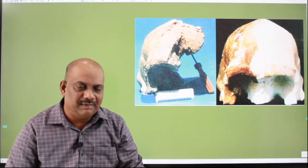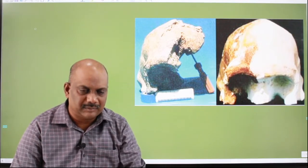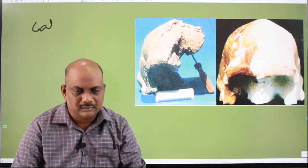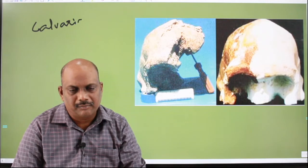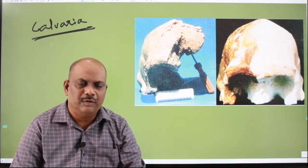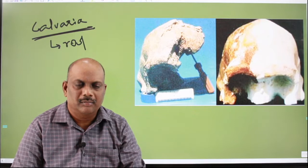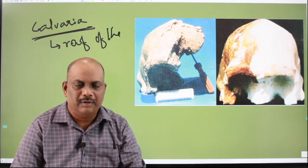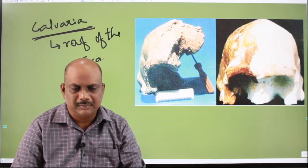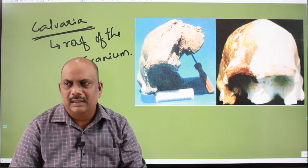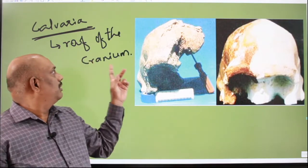So this portion, we call it as a calveria. Calveria means it's a roof of the cranium. Roof of the cranium. Now you should be comfortable with the term cranium.